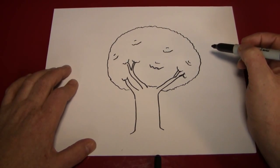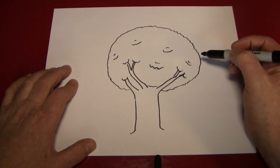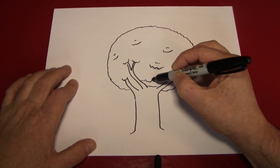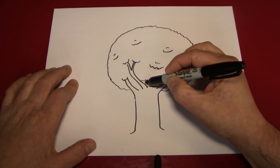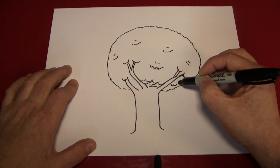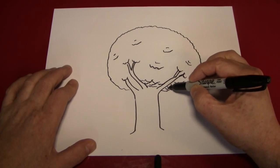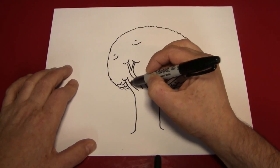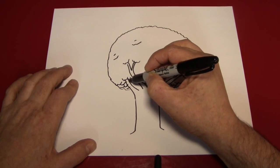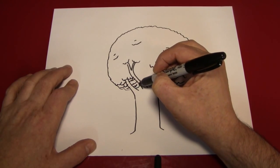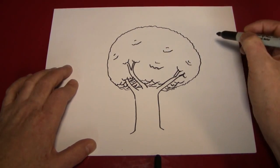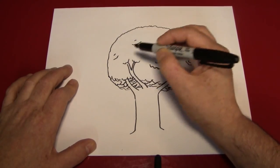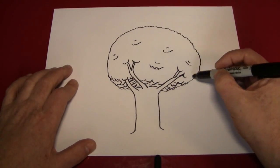Then to give it some depth, you're going to want to give it extra leaves on the bottom, a little more detail, as if it's closer to you. And we're just making little curves with the pen or pencil or crayon or whatever it is that you're using at home. And we're just kind of covering the bottom of the tree here like that.